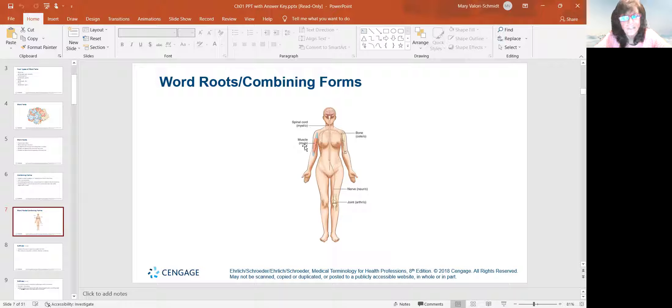Muscle is myelo. But one is spelled M-Y-E-L-O, one is spelled M-Y-L-O. Bone is osteo, nerve, neuro, and joint is arthro. So there's some basic words for us to get started with. These are the word roots with that O, that vowel at the end that makes them the combining form.